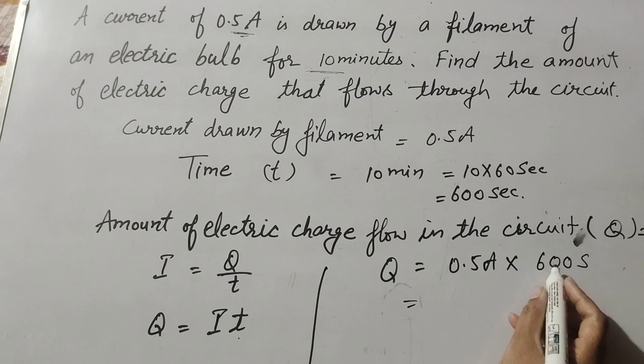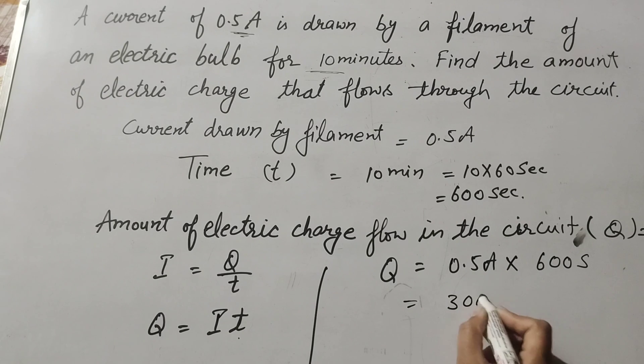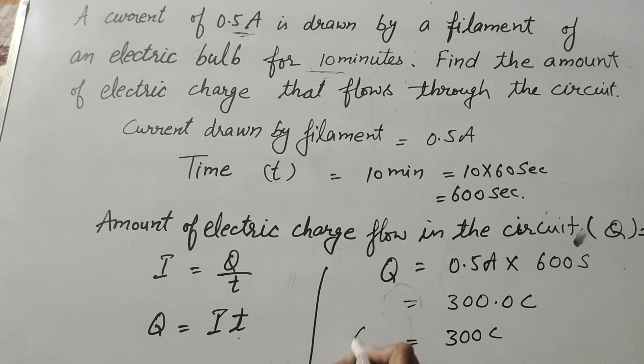So 0.5 multiply by 600, it is equal to 300.0 coulomb. So it is equal to 300 coulomb.